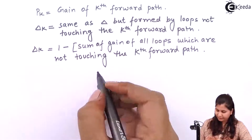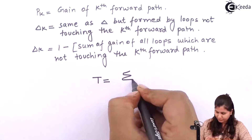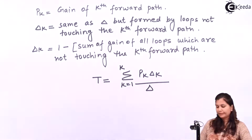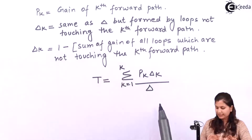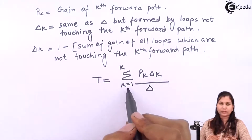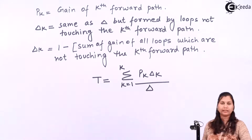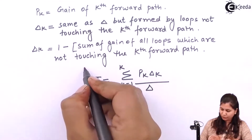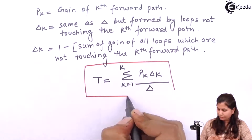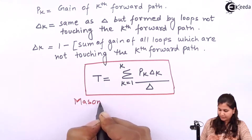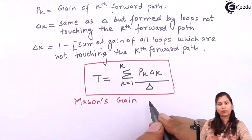To recap, the Mason's gain formula is T equals summation k equals 1 to K of p_k times delta_k divided by delta. Delta is the graph determinant as already defined. Delta_k is the same as delta but formed by loops not touching the kth forward path. p_k is the gain of the kth forward path, and k goes from 1 to K, that is the total number of forward paths. By substituting all these values you get the overall transfer function T of the control system. This formula is known as the Mason's gain formula and is very popular and commonly used for finding the transfer function.